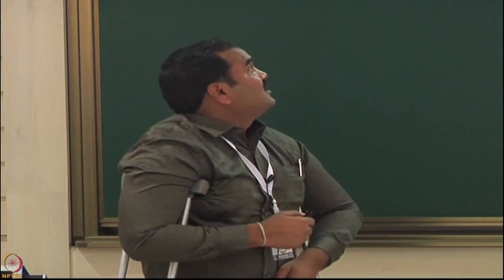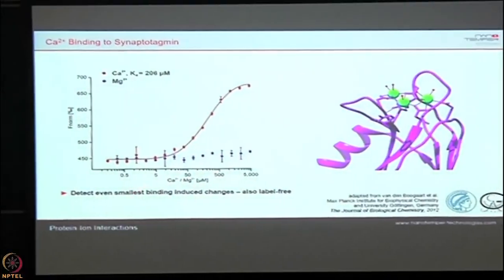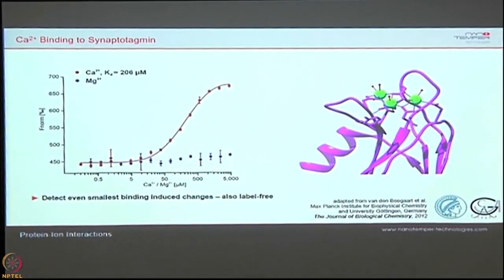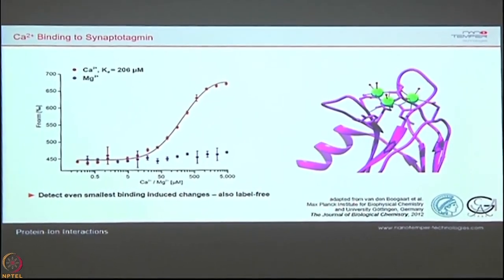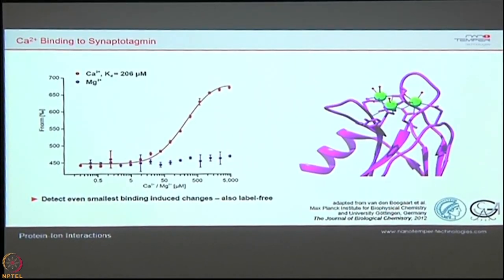Another example is protein-ion interactions. These are always very special: when a protein and ion interact, the ion is very small in size and the protein is very big — the size does not change at all. But still, when a protein binds, there is a displacement of at least one water molecule. Even with this small change we are able to determine the binding affinity. This is the biggest advantage — even calcium binding proteins can be studied, and a control with magnesium showing no binding validates the assay.